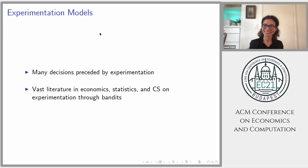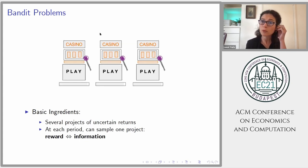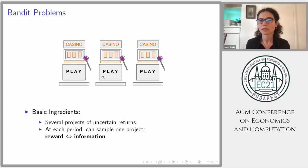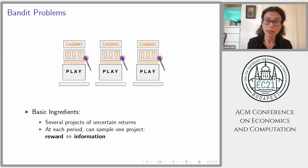Many decisions are preceded by experimentation, and as a consequence there is a vast literature in economics, statistics, and computer science on experimentation through bandits. What I'm going to talk about is actual theoretical models based on what is commonly known as the bandit problem. In those models there are two basic ingredients. The first is that you're facing a bunch of projects of uncertain returns. In the classical example, you go into a casino facing a bunch of slot machines, and you need to choose one. At each period you can sample one project — one slot machine — by pulling the arm. You both get a reward and you learn something, so the reward and the information are intertwined.